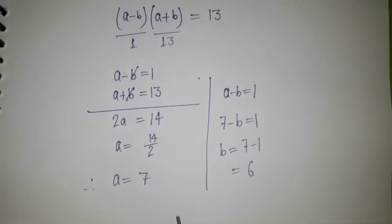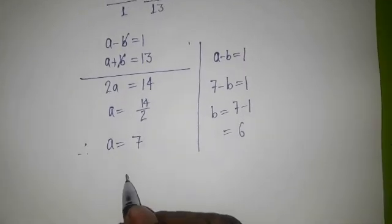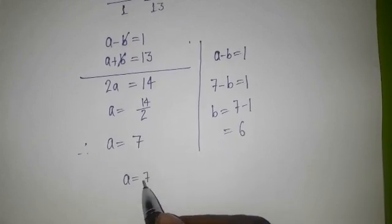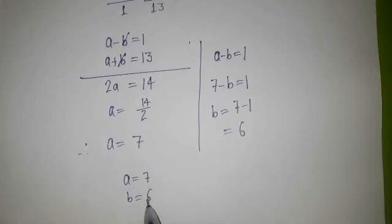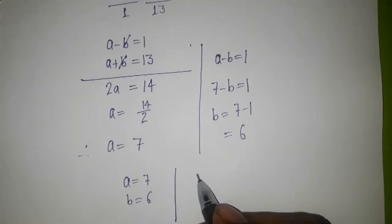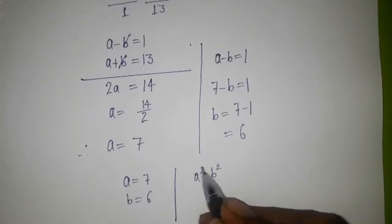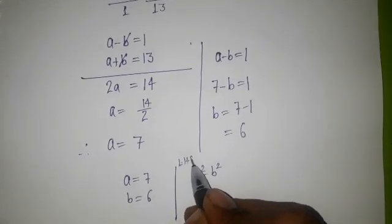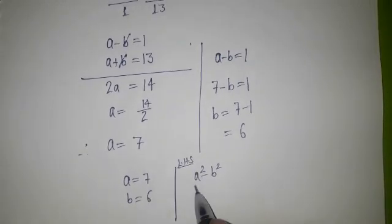...6. So we have values for a and b: a is 7 and b is 6. So if I'm putting here a² - b², this is our LHS term. So if I'm putting the value for a...